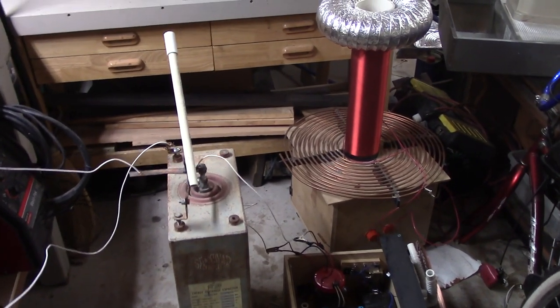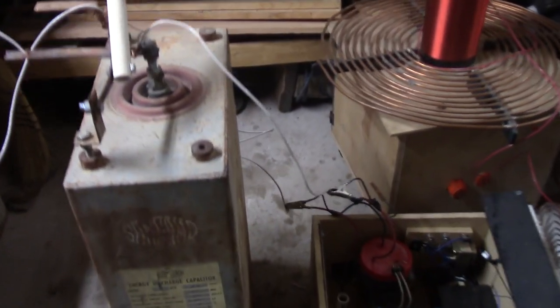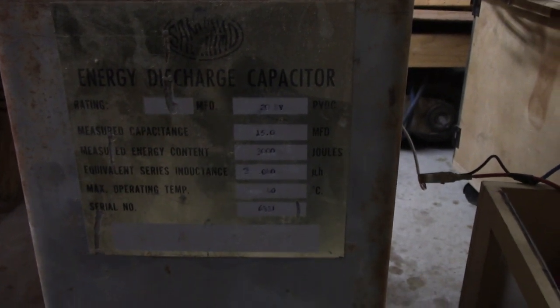Welcome back. I know it's been a while since I posted. I'm going to try and make up for it with this video, which I believe a lot of you are going to find really cool. What I have here is an energy discharge capacitor rated at 20,000 volts, 15 microfarads, and 3,000 joules.